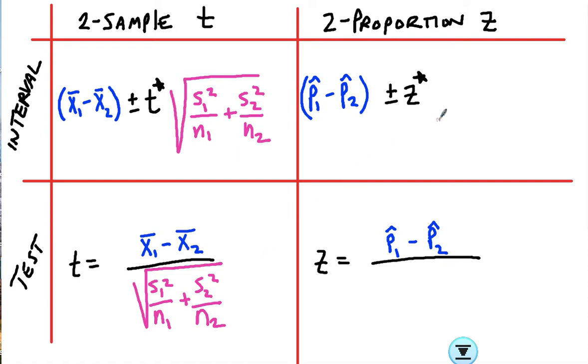Then over here for two-proportion, the standard deviation part of the formula is, again, a big square root. You're going to have p̂₁(1 - p̂₁)/n₁ + p̂₂(1 - p̂₂)/n₂.